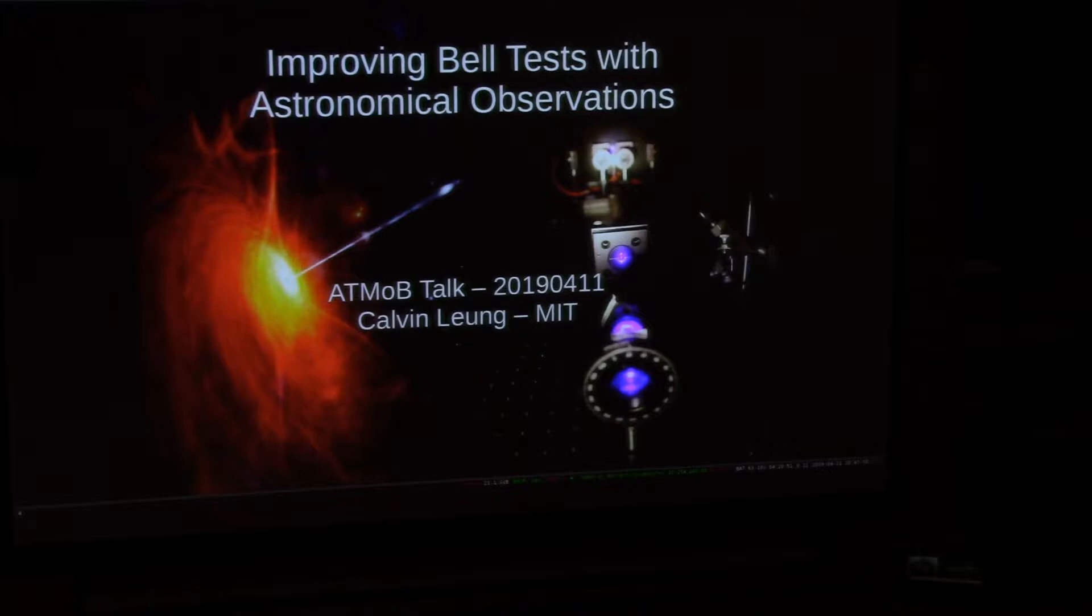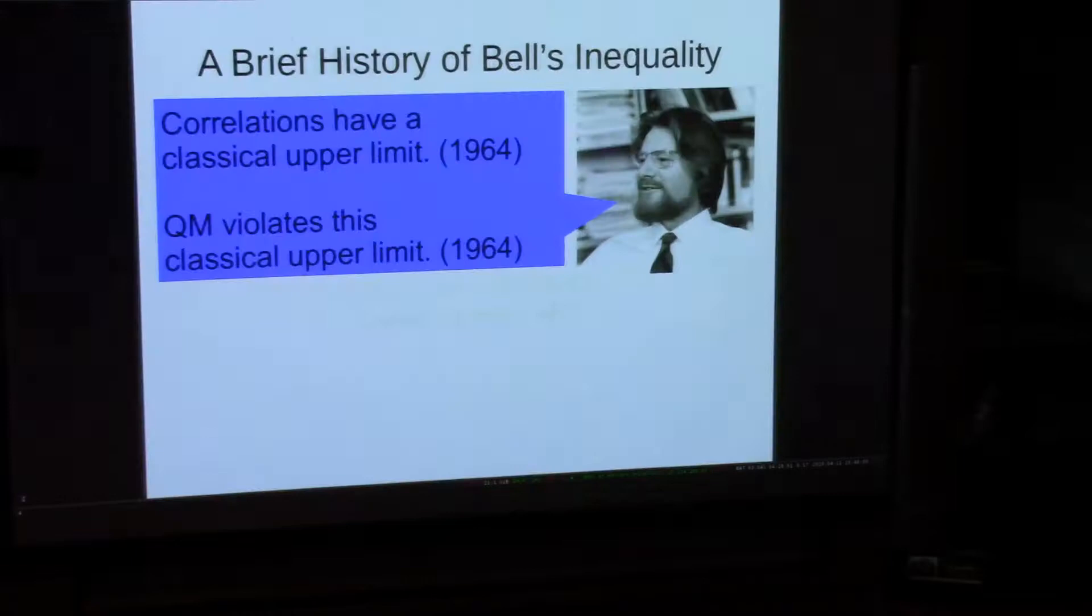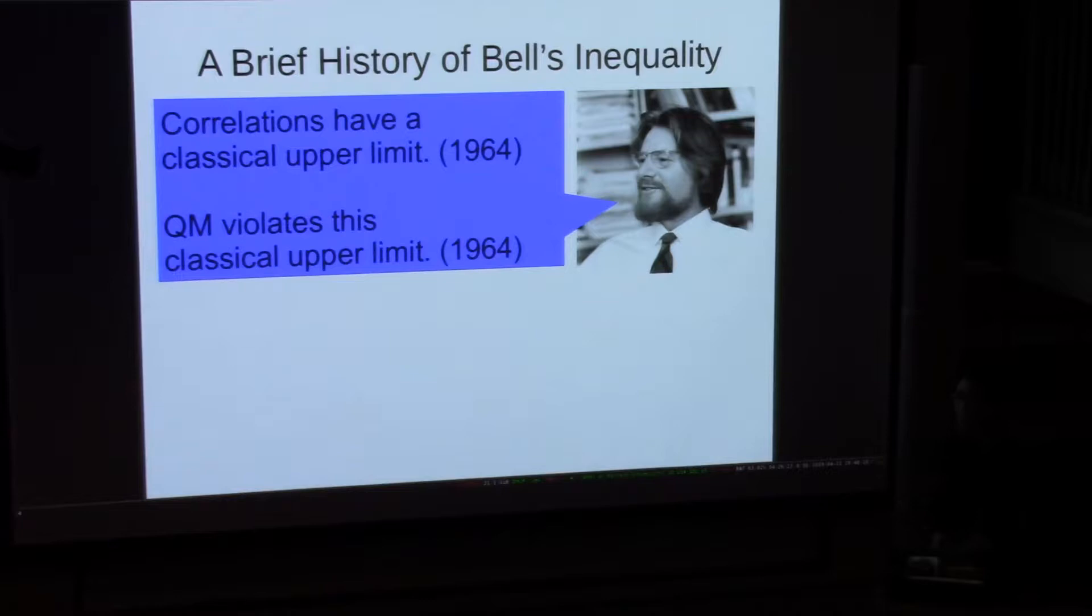The title of my talk is Improving Bell Tests with Astronomical Observations. The first question is, what are Bell tests? It turns out that there is a way to quantify whether a system, like you have two atoms or something, whether it's entangled. A physicist named John Bell, in 1964, quantified this. He came up with a mathematical statement about the amount of correlation you can have between two particles, two photons, two atoms, two electrons, in any arbitrary state. And it turns out that if you have, if these two particles are entangled together, then the amount of correlation they'll exhibit under this particular metric.